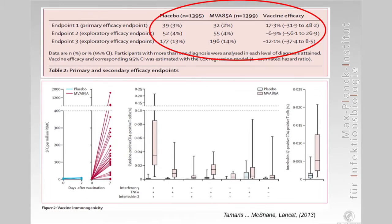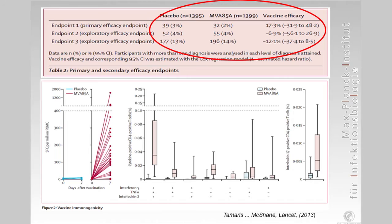Let me briefly show data published about a year ago by the Oxford group. Despite our hopes, there was no effective efficacy in this trial — ranging, depending on the different endpoints, between plus 17.3% and minus 12% protection afforded by the booster with MVA-85A on top of BCG in newborns.